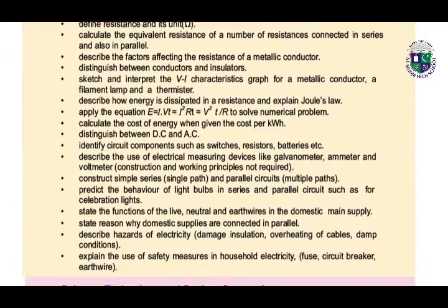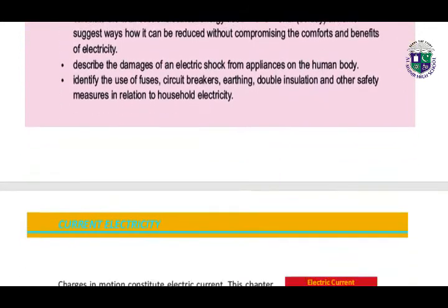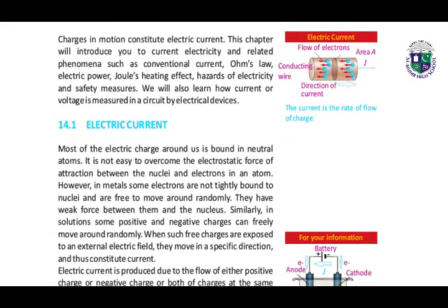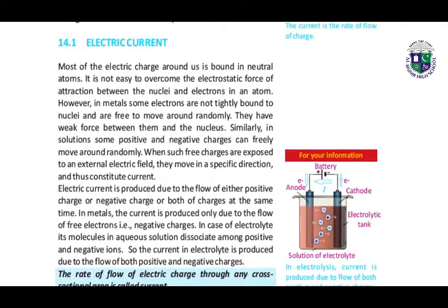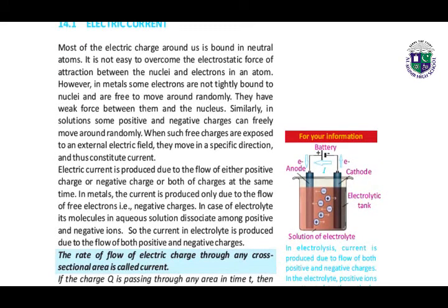It is about current electricity. In this unit, we are going to learn about the electric current. First of all, look at this theory — the introduction of electric current. Most of the electric charge around us is bound in neutral atoms. It is not easy to overcome the electrostatic force of attraction between the nuclei and the electrons in an atom. However, in the case of metals, some electrons are not tightly bound to nuclei and are free to move around randomly. They have weak force between them and the nucleus.